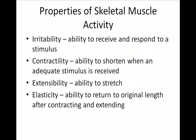A couple of properties of muscle. One is irritability — muscle is able to receive and respond to stimuli. That's how skeletal muscle is voluntary. You can actually think, 'I want to move this muscle,' and your brain sends a signal to the muscle allowing it to contract. So that's irritability: the ability to receive and respond to a stimulus.